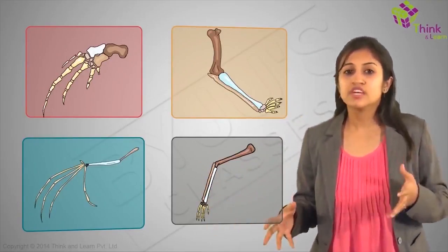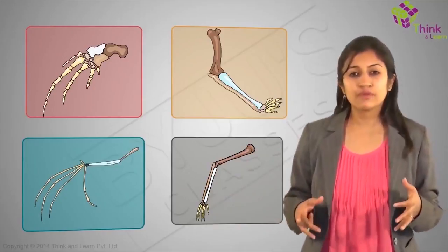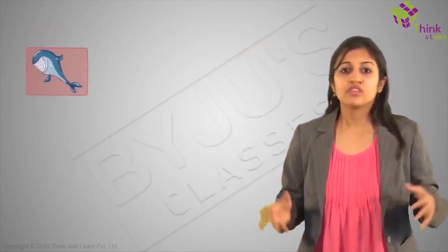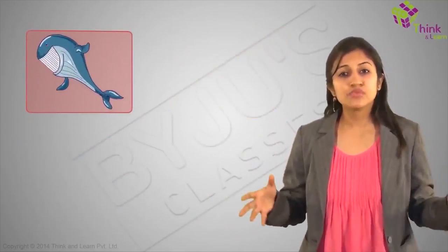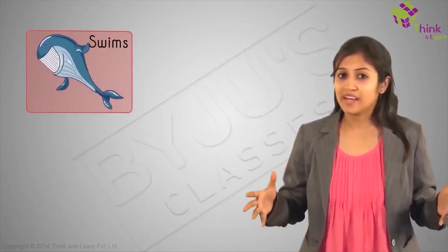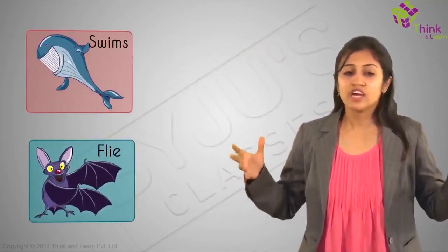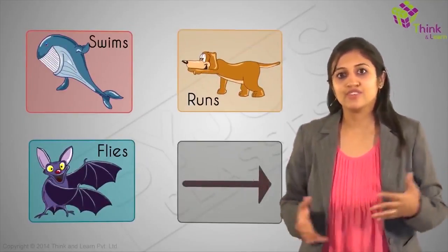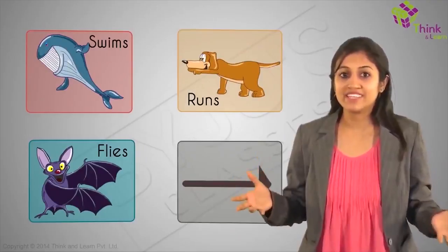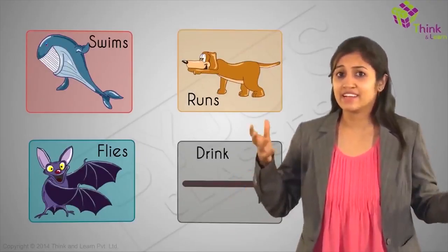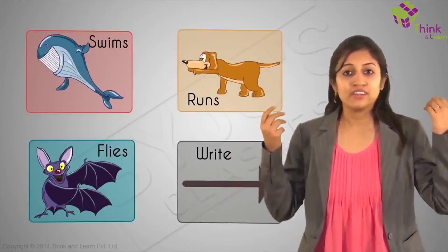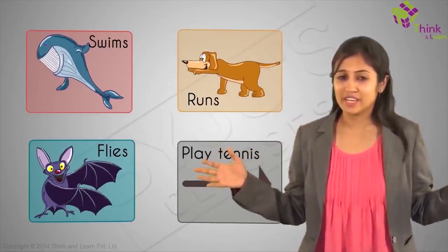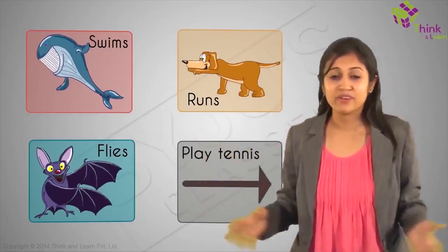All four of us use our four limbs for totally different purposes. The whale swims, the bat flies, a dog runs, and I use it for a million things — like eat, drink, write, play tennis, draw, wave hands when I'm teaching, and so on.